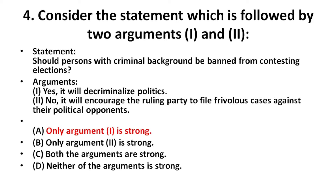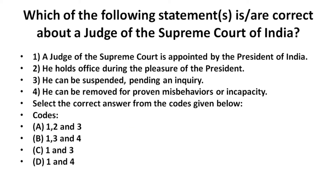The next question is: which of the following statements are correct about a judge of the Supreme Court of India? Statement one: a judge is appointed by the President of India — this is correct. Statement two: he holds office during the pleasure of the President — this is wrong. Statement three: he can be suspended pending inquiry — this is also wrong. Statement four: he can be removed for proven misbehavior or incapacity — this is correct. So the correct options are the first and the fourth.